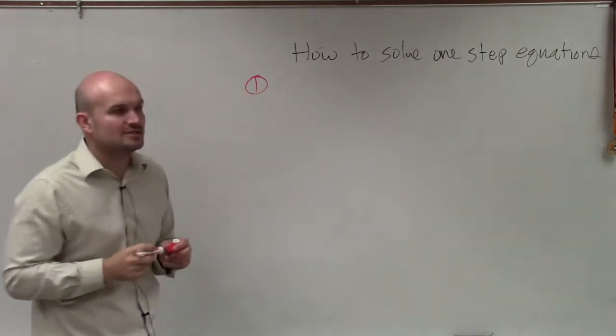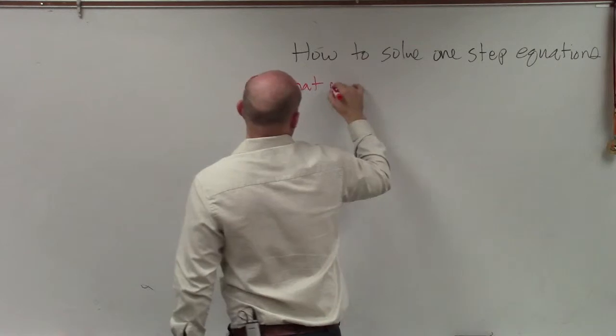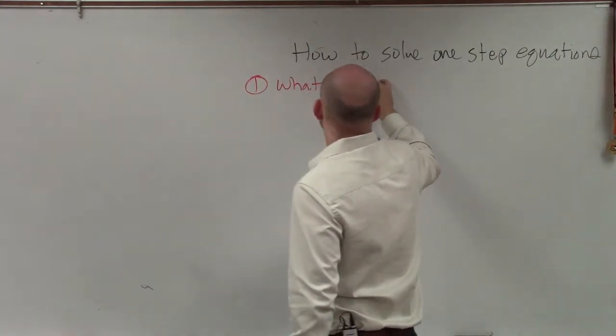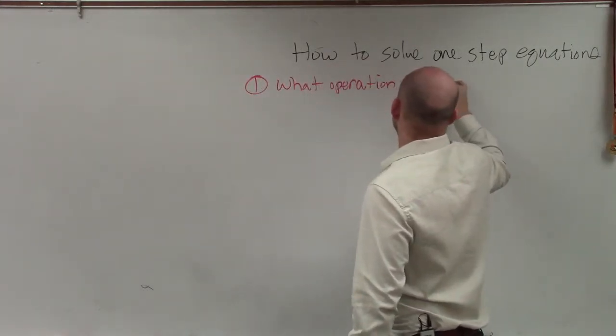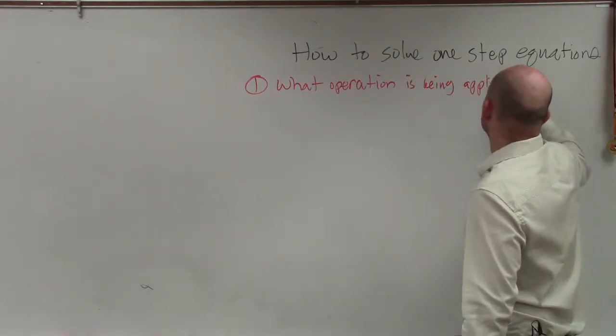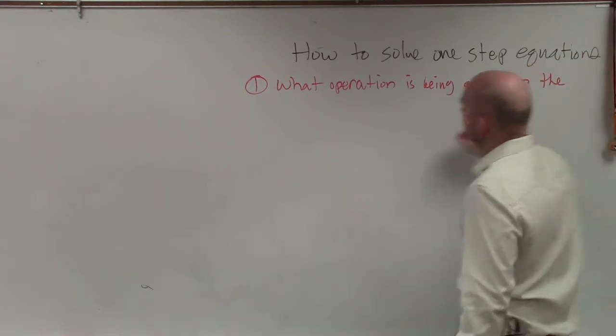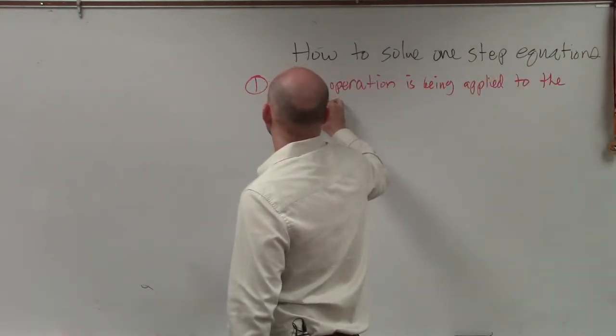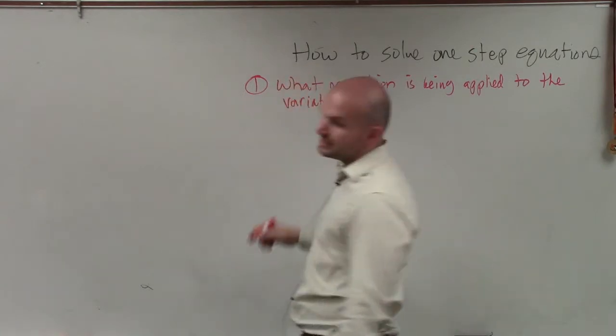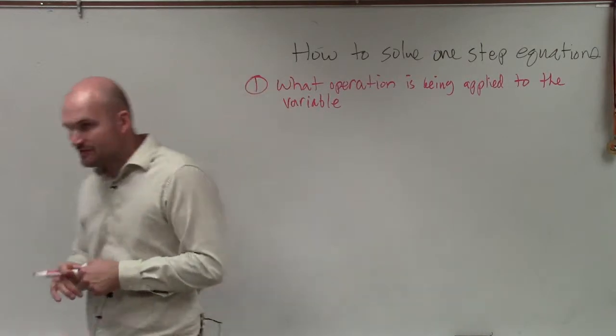But the first question we want to identify is what operation is being applied to the variable. All right? So obviously, in a one-step equation, we're going to have an equation. And there's going to be an equal sign. And there's going to be a variable, right?